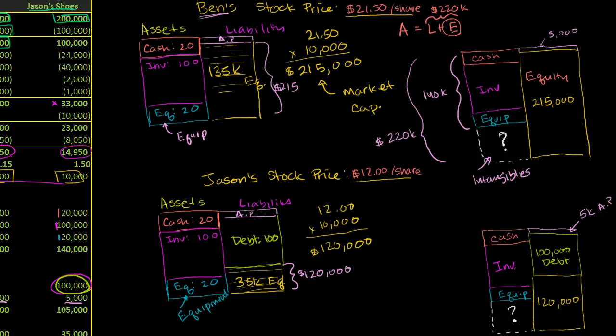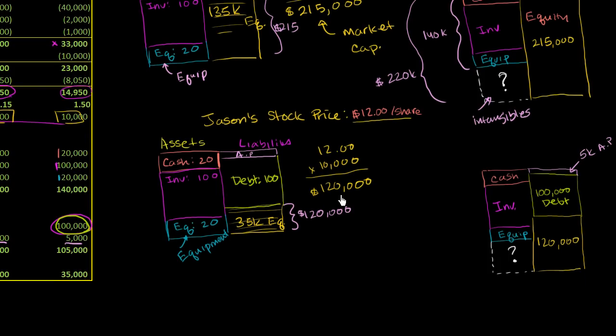And the same thing is true of Jason's company. When they assign $120,000 market cap there, this is $120,000 in equity, market value of equity. He has another $105,000 in liabilities, so the market's valuing their equity plus liabilities at $225,000. $120,000 plus $100,000 plus $5,000, so $225,000.